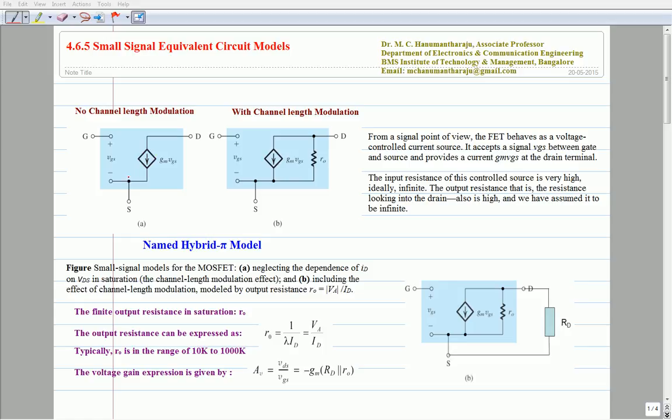From the signal point of view, the MOSFET behaves as a voltage controlled current source, that is VGS controls the current flow between the drain and source.